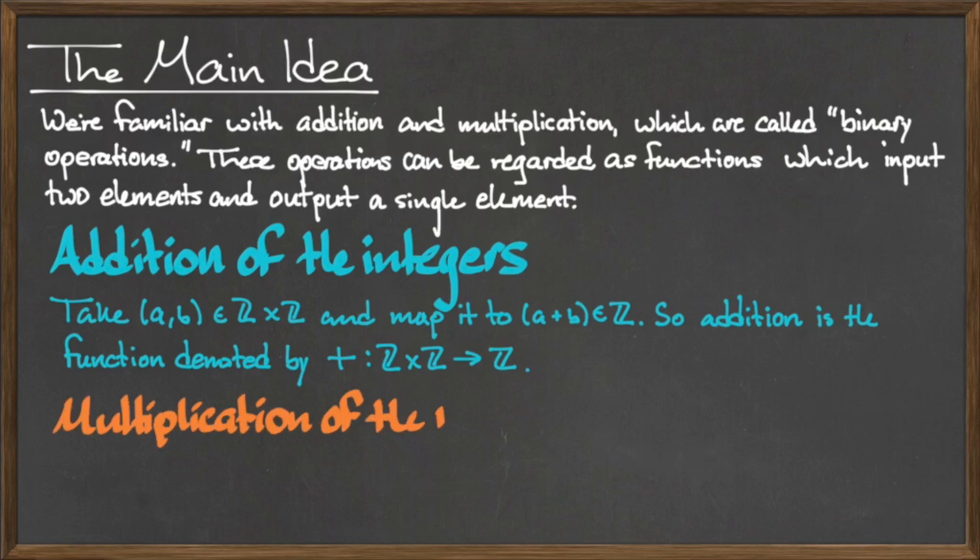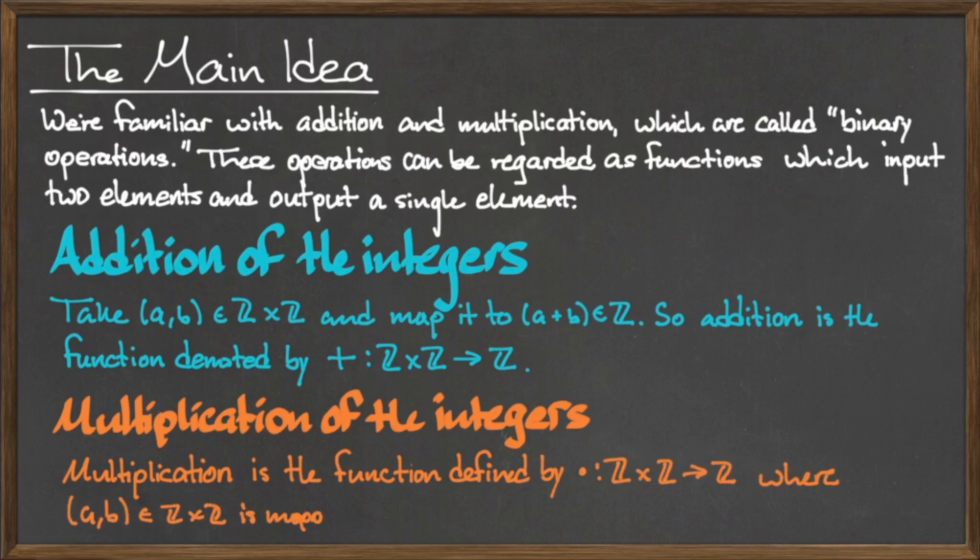Another example is the multiplication of integers. To multiply the two integers a and b, we take the ordered pair (a, b), which is an element of the set Z × Z, and map it to the single element a times b in Z.